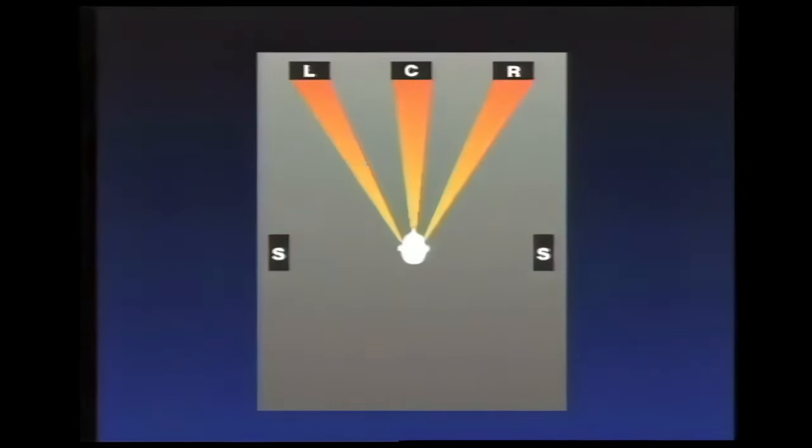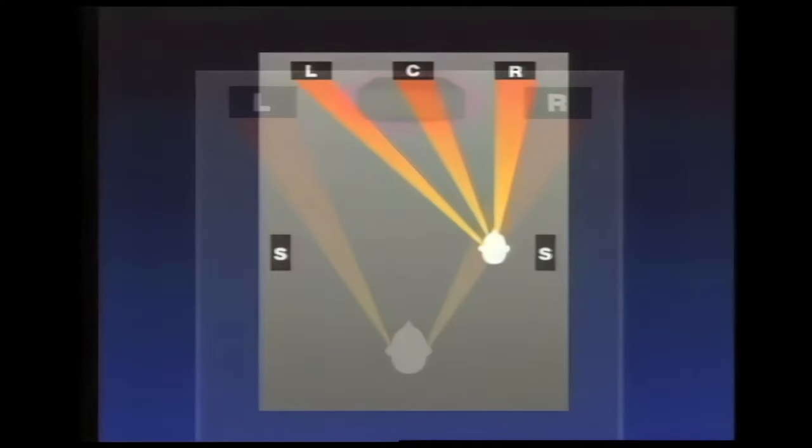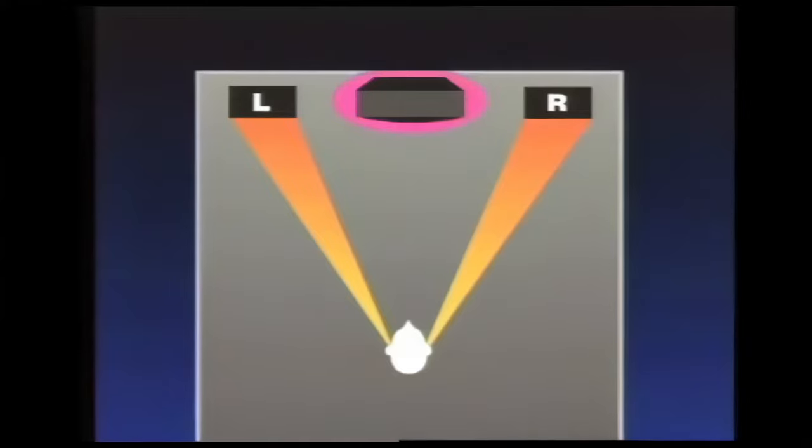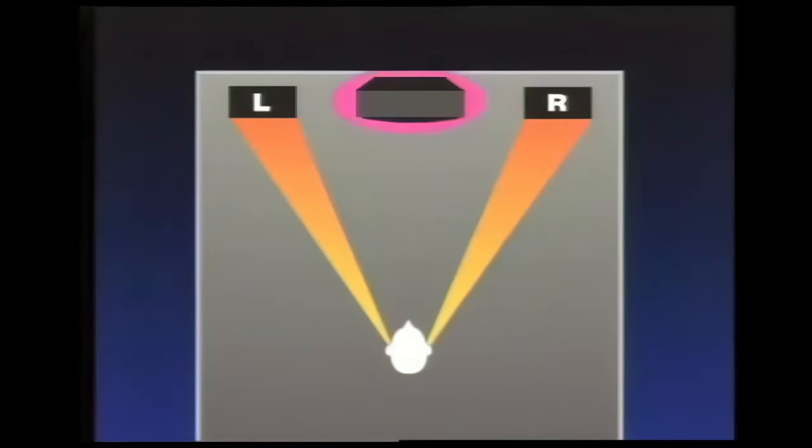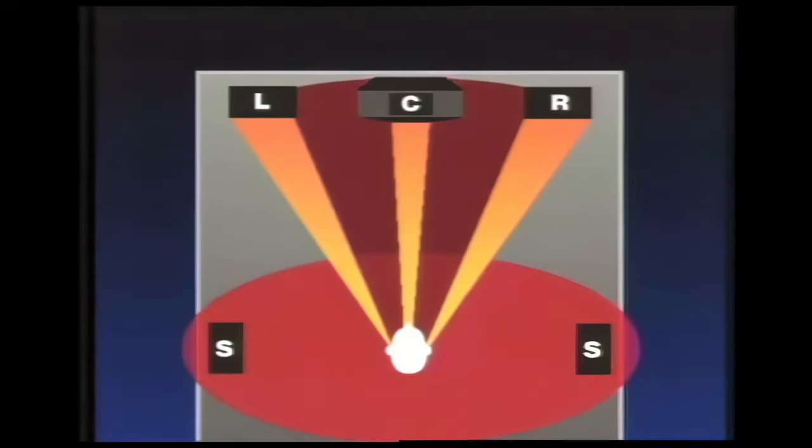One way to show the advantage of ProLogic is by the effectiveness of the center channel speaker. When playing a dialogue passage, note how it comes from the screen direction no matter where you're standing. Now switch to regular stereo and notice how the dialogue wanders as you change your viewing position and is never sharply focused. Only in the central sweet spot do you have a chance of getting proper balance. Returning to the ProLogic mode will be preferred for its sound field coverage and stability.